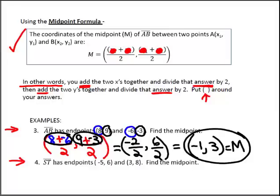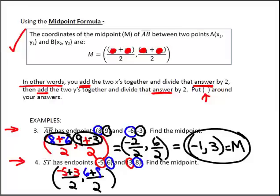I'm going to do the same thing with ST. I know that the start means I have to do my setup. There's 2's underneath. And plus signs above it. Now, I'm going to fill in what I know. My first numbers, negative 5 and 3, go in the first spots. My second numbers, 6 and 8, go in the second spots.